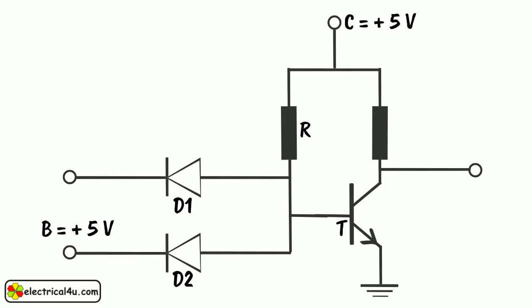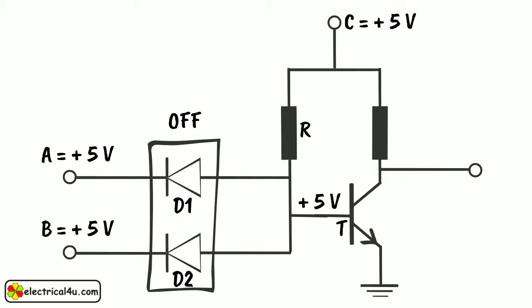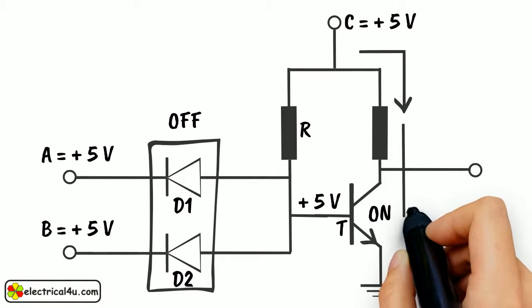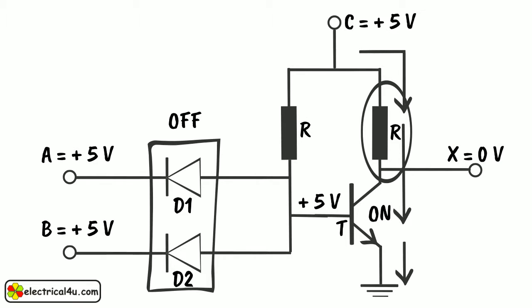When both of the inputs are given with plus 5V, that is logical 1, both of the diodes are in OFF condition. Hence, supply voltage will appear at the base terminal of transistor T, which makes it switched ON, and supply voltage gets passed to the ground through this transistor. Ideally, the entire supply voltage plus 5V will drop across resistor R, and output terminal X will get ideally 0V. Hence, output is considered as logical 0. Output is only 0 when and only when both inputs are plus 5V or logical 1.